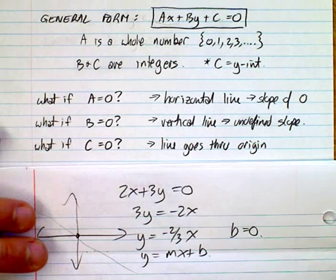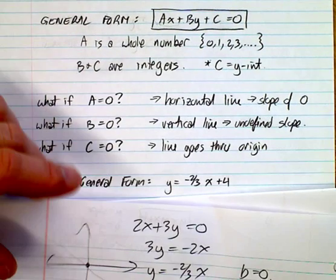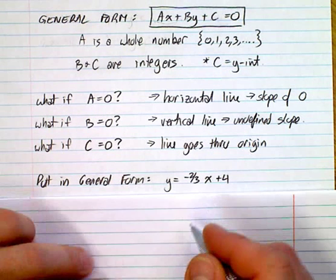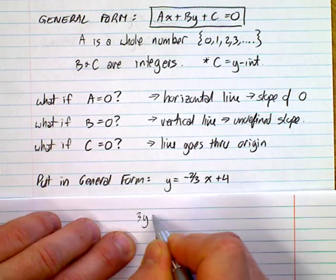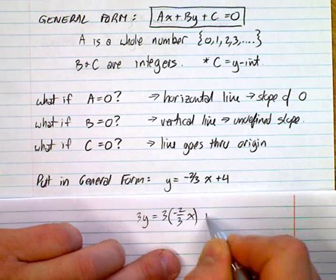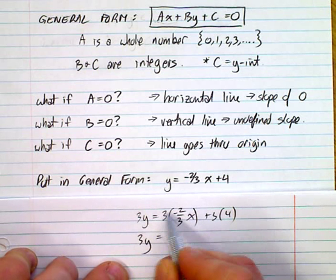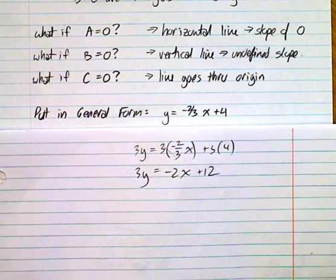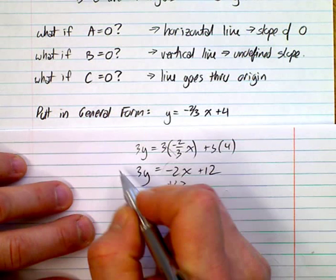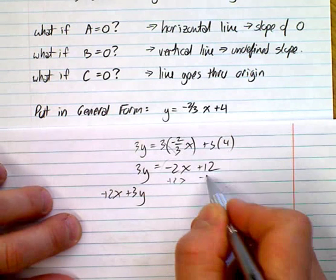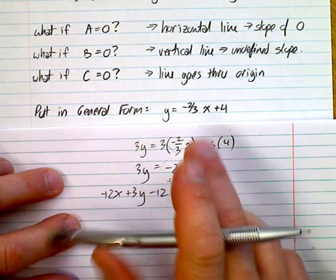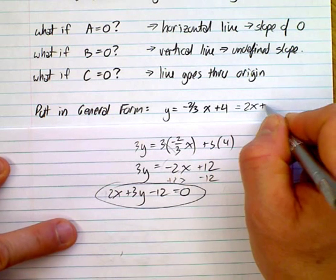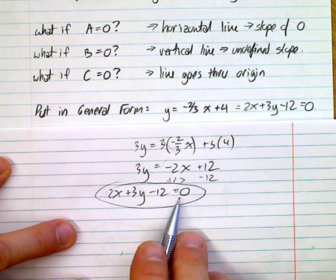Let's practice putting an equation into general form. Starting with y equals negative two-thirds x plus 4, we first eliminate the fraction by multiplying everything by 3: 3y equals negative 2x plus 12. Since the x term is negative, add 2x to both sides: 2x plus 3y equals 12. Subtract 12 from both sides: 2x plus 3y minus 12 equals zero. That's your final answer in general form.